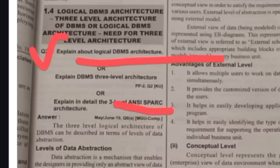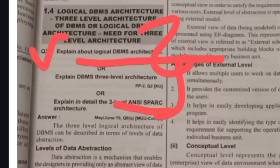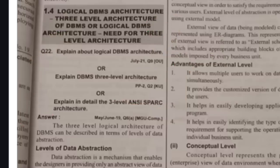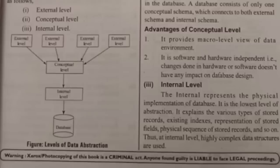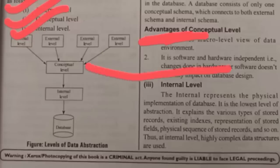Three-level architecture is also called ANSI SPARC architecture or logical DBMS architecture. This is an important question. Three-level architecture means the data we store in a database is divided into three levels. What are the three levels? External level, conceptual level, and internal level.